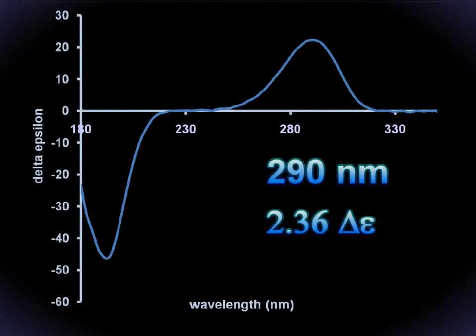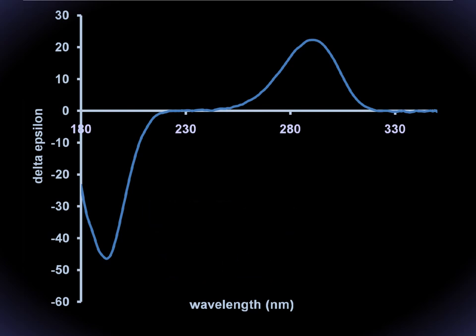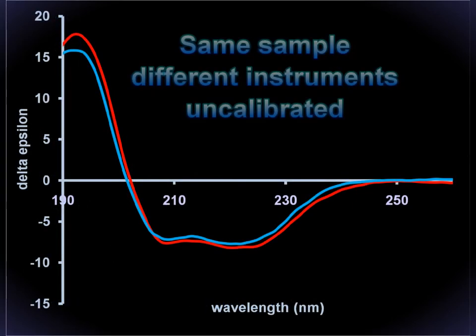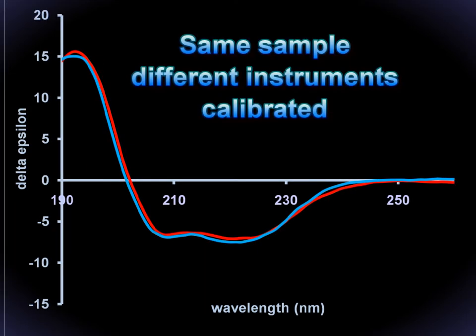CSA has two large CD signals of known ellipticity in the UV which can be used to calibrate a CD instrument for magnitude and polarisation. This ensures that protein spectra taken on your instrument are consistent with those taken elsewhere and with protein spectra in the data sets used for secondary structural analysis.